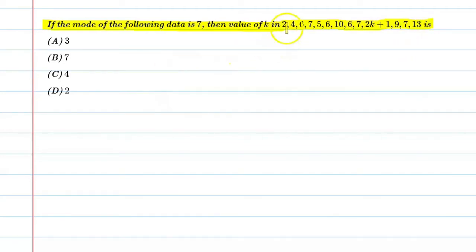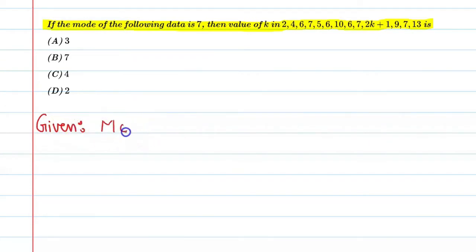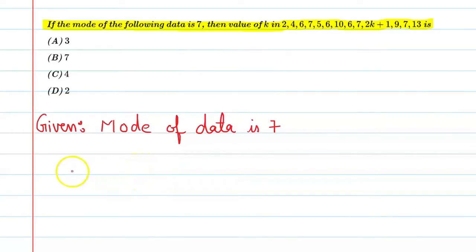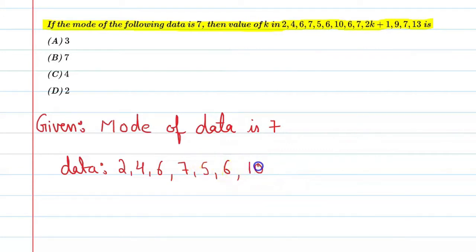Alright, so this raw data is given, and we need to find the value of k. Given is that the mode of the raw data is 7. The data is: 2, 4, 6, 7, 5, 6, 10, 6, 7, 2k plus 1, 9, 7, 13.